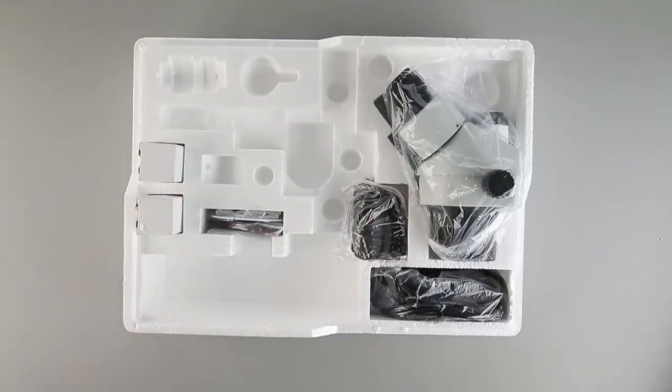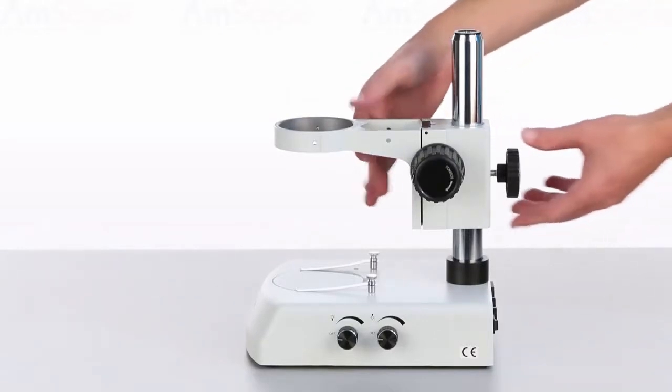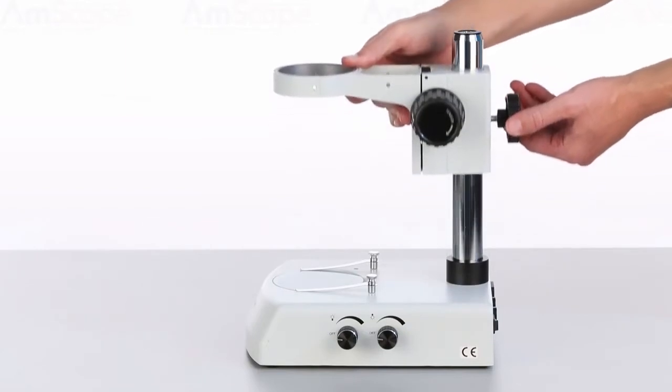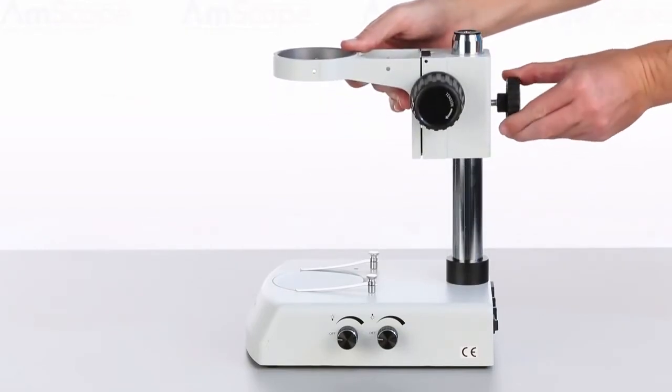Let's start with the body. The coarse focus is set by raising and lowering the focusing rack. Once it's in place, secure it by turning the rear locking knob.